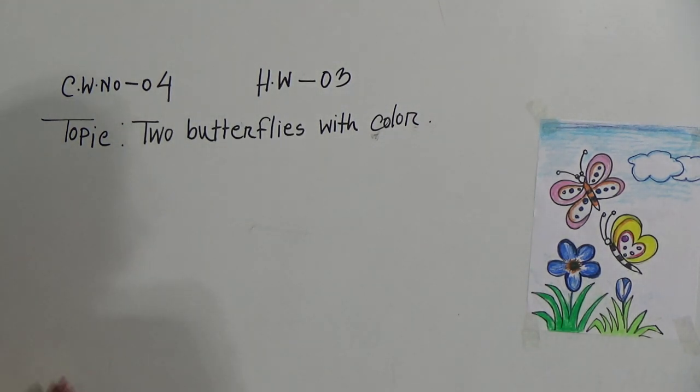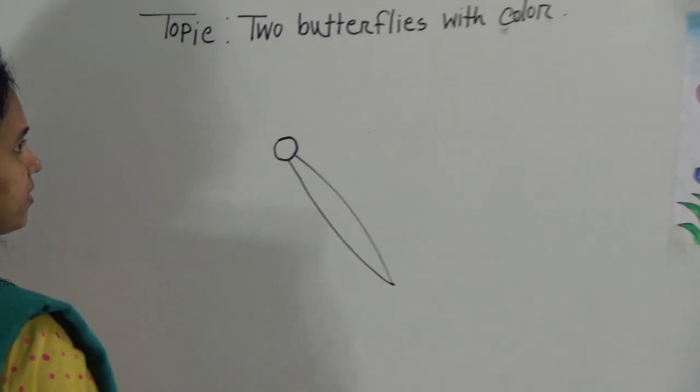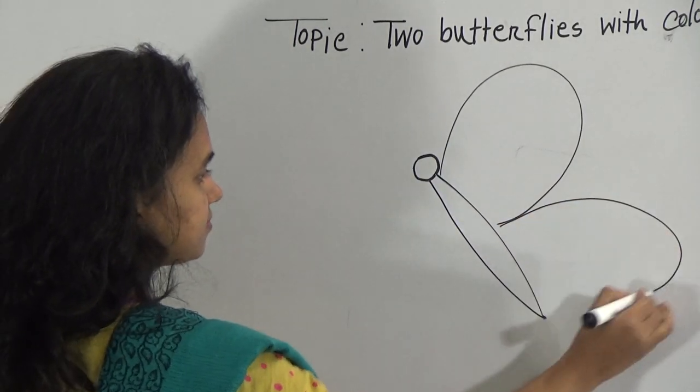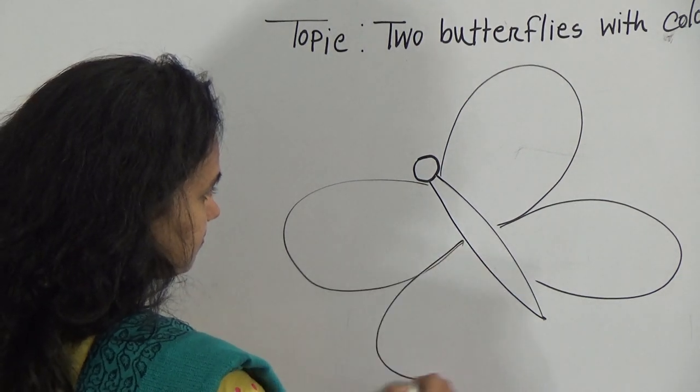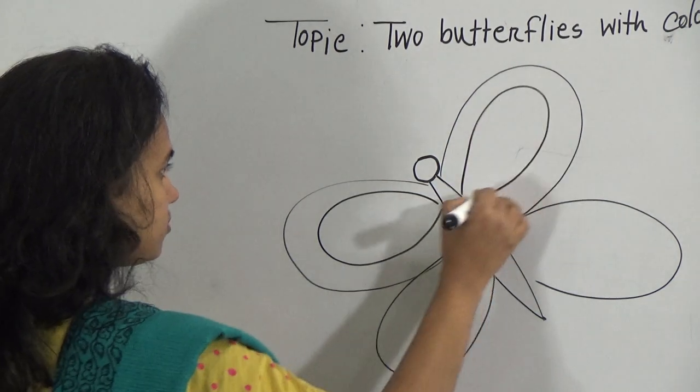So, now I will start the drawing. How to draw two butterflies. First, draw just like a circle. Give this. Okay. Then give this type of line. Then here also give a line. Here also.